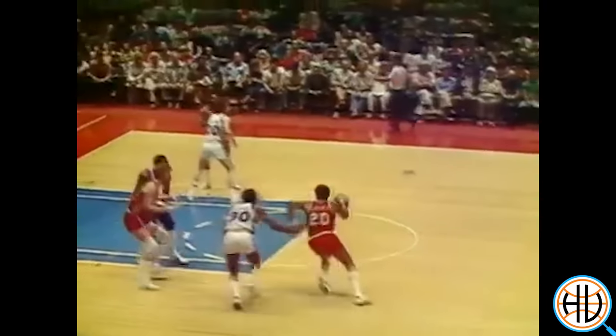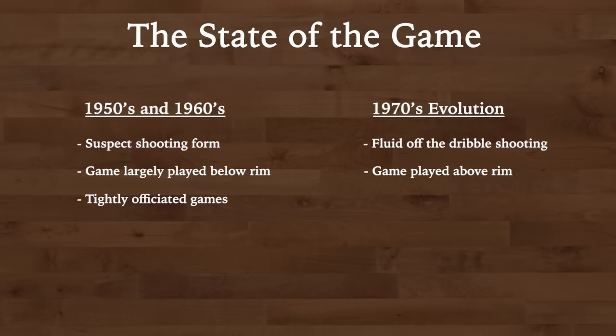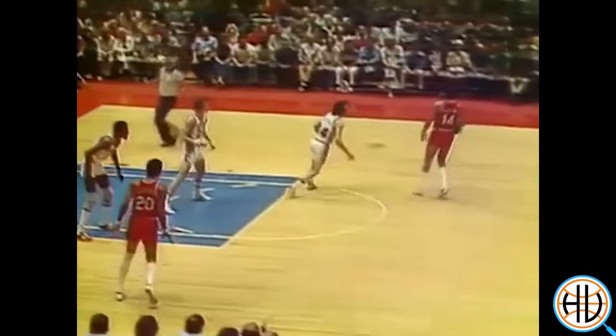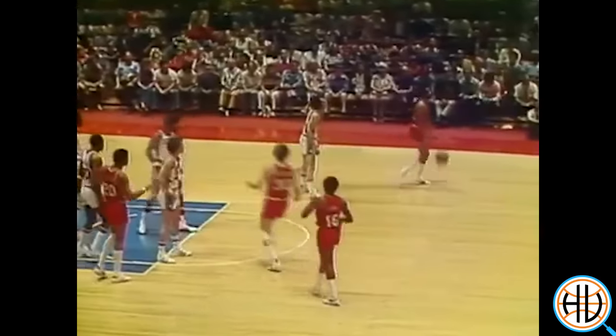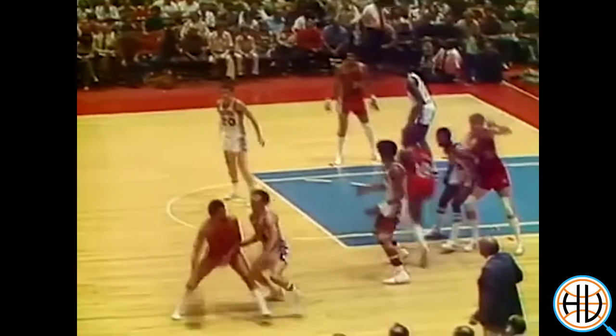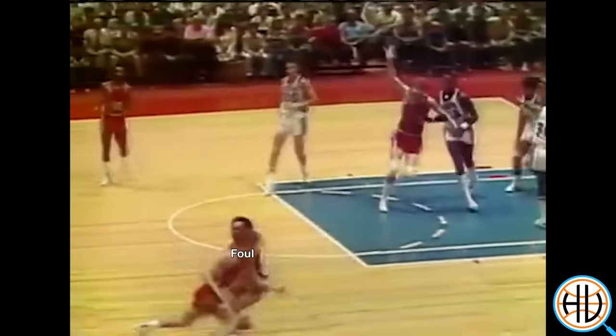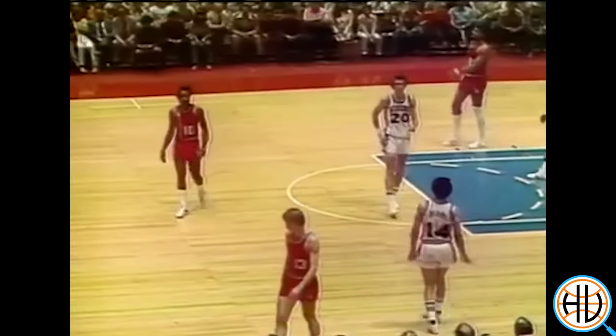In general, the Blazers-Sixers game was played above the rim, with alley-oops and players catching bodies. Referees called a tight game in the 50s and 60s, leading to less physical play, and that's still largely the case in the 70s. For example, with the 76ers losing, Henry Bibby tried to jumpstart a comeback by pressuring the Blazers' ball handlers to create a steal, only to be called for three ticky-tack reach-in fouls in a row.